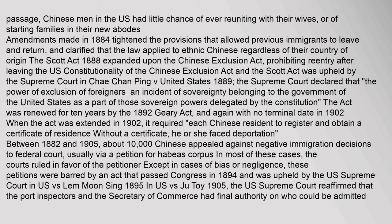Amendments made in 1884 tightened provisions allowing previous immigrants to leave and return, and clarified that the law applied to ethnic Chinese regardless of their country of origin. The Scott Act of 1888 expanded upon the Chinese Exclusion Act, prohibiting re-entry after leaving the U.S. The constitutionality of the Chinese Exclusion Act and the Scott Act was upheld by the Supreme Court in Chae Chan Ping v. United States in 1889, which declared that the power of exclusion of foreigners is an incident of sovereignty belonging to the government of the United States and is part of those sovereign powers delegated by the Constitution.